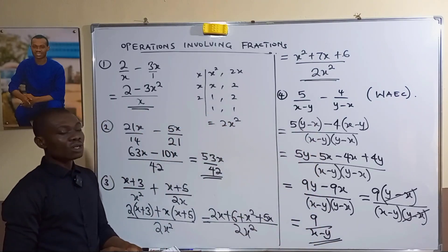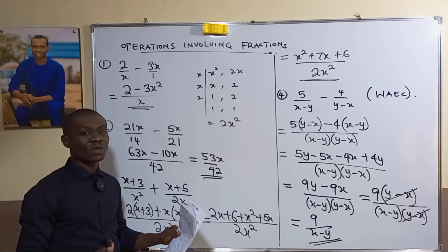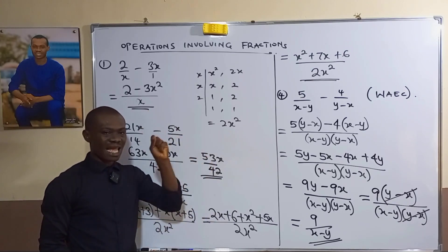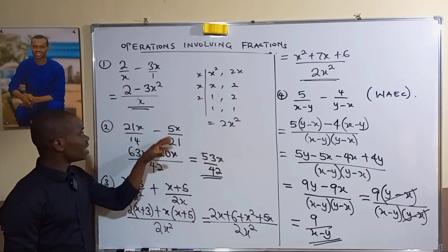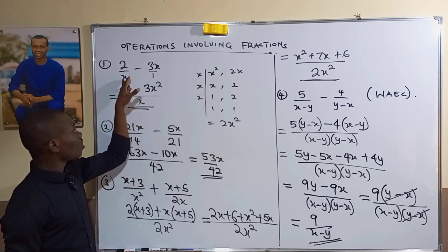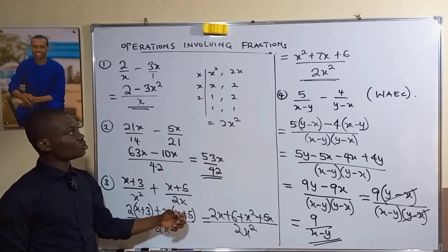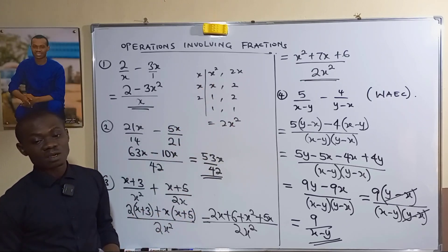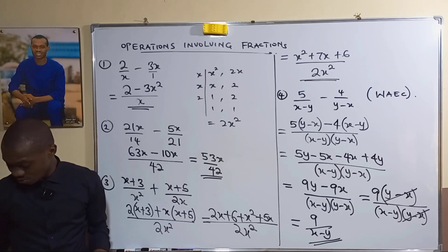When simplifying algebraic fractions involving addition or subtraction, LCM is very important. If the denominators are numbers, use the standard method. If they contain variables, multiply them and reduce to the lowest common multiple. You can also use a table to find the LCM quickly.